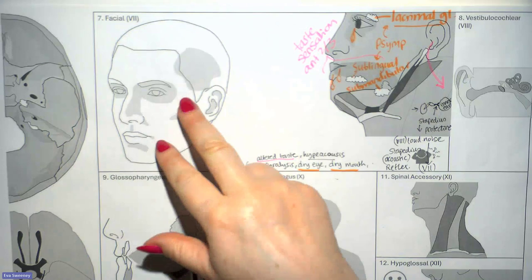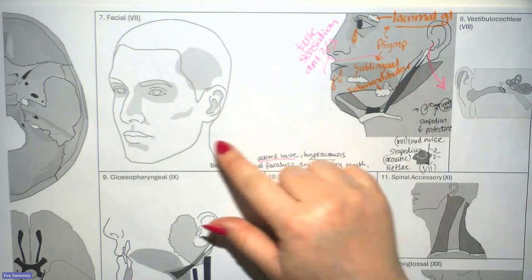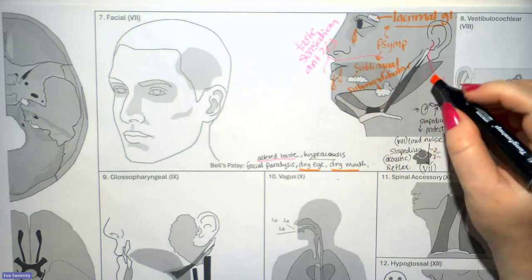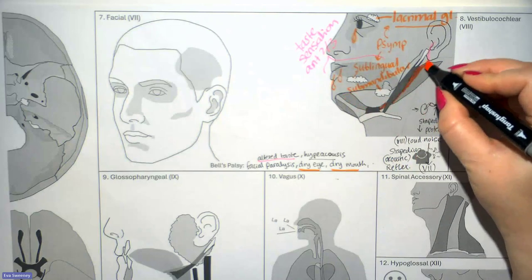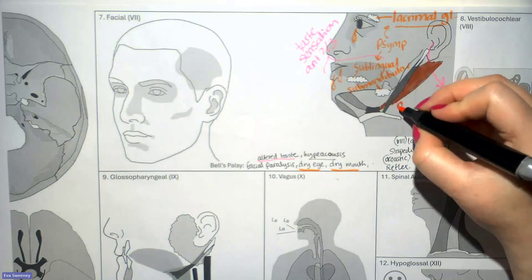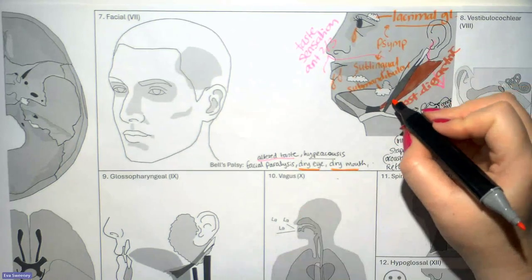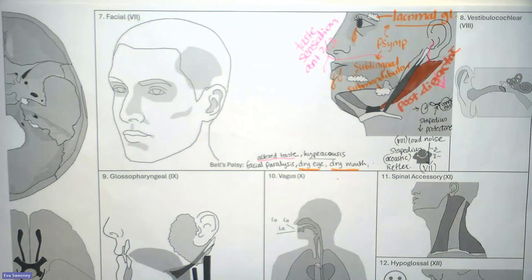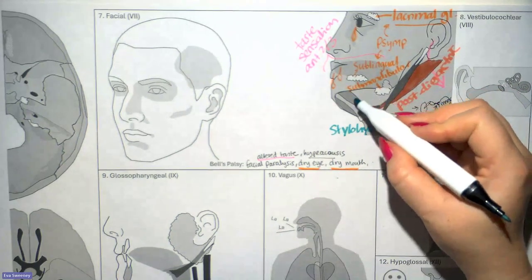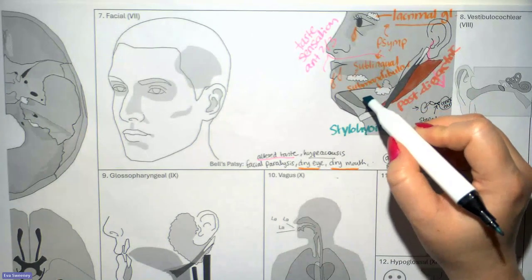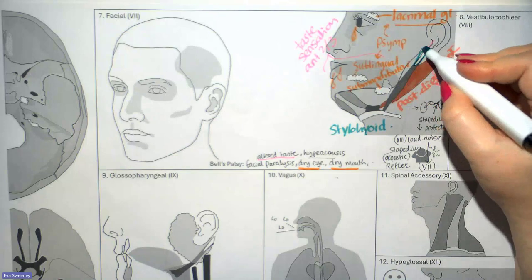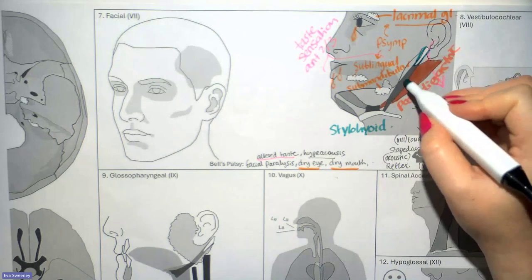Another function of the facial nerve is motor innervation. The digastric muscle's posterior belly is innervated by the facial nerve, as is the stylohyoid muscle. So in pairs: mylohyoid and the anterior belly of the digastric are both innervated by the trigeminal, whereas the stylohyoid and the posterior digastric are both facial.